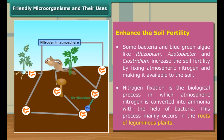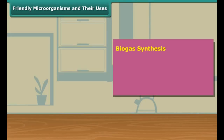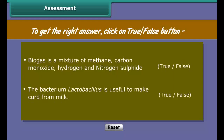Nitrogen fixation is the biological process in which atmospheric nitrogen is converted into ammonia. There are other friendly anaerobic bacteria that are used in the synthesis of biogas. Biogas is a mixture of methane, carbon dioxide, hydrogen, and hydrogen sulfide.